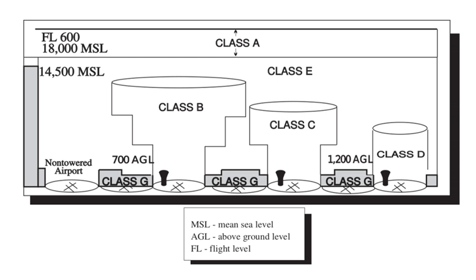In Lithuania, Classes A and B are generally not used at all. Classes C and D are used in the following areas of controlled airspace of the Republic of Lithuania: in control zones, in terminal control areas, and in control areas.